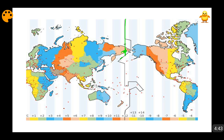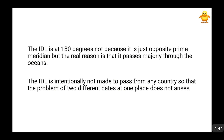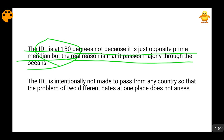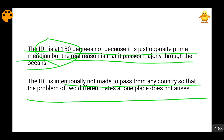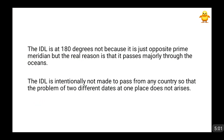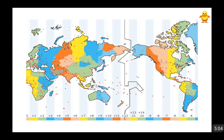So two reasons I have discussed: the international dateline is at 180 degrees not because it is just opposite the prime meridian, but because the real reason is that it passes majority through the ocean, and it is intentionally not made to pass through any country so that the problem of two different dates at one place does not arise. It should not pass through the landmass of any country.